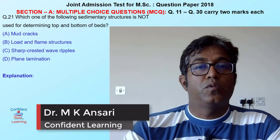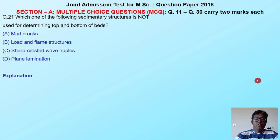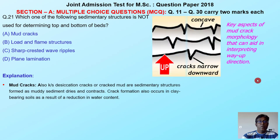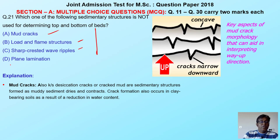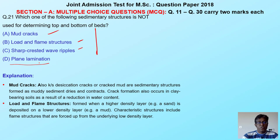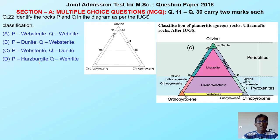This is the first question related to the bottom-up structure. If you have seen my lecture uploaded on the drive as well as the Telegram channel, I have discussed in detail what the way-up structure is and which features are defined for way-up structure identification. It is very simple — mud crack, load and flame structure, sharp base, ripple marks — all these are used for the determination of the top and bottom of beds. However, plain lamination is related to layer thickness, so it is not used to define any type of top and bottom. Our answer is D: plain lamination.